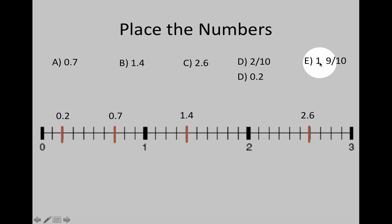Let's look at 1 and 9 tenths. It's larger than 1 but smaller than 2, so we're going to start counting at 1 up to 9 tenths: 1 and 4 tenths, 1 and 5 tenths, 6 tenths, 7 tenths, 8 tenths, 9 tenths.